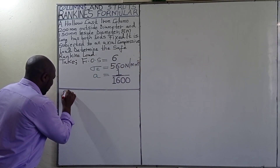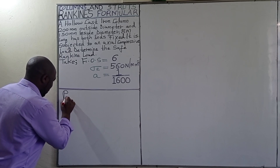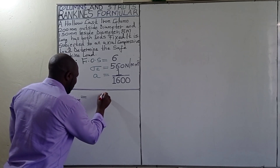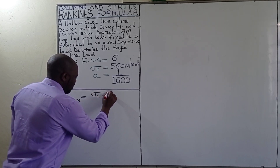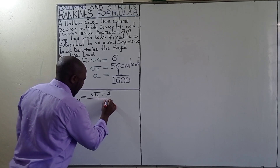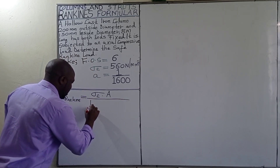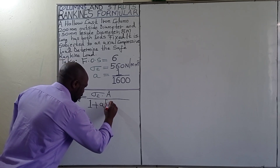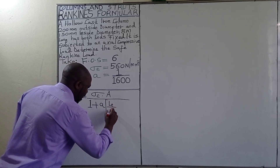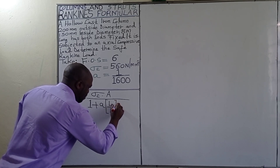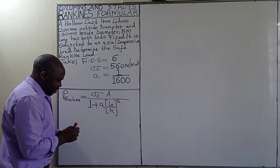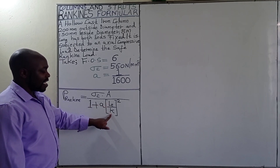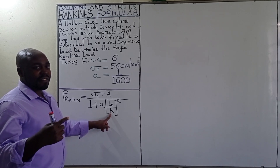The Rankine crippling load, P Rankine, is given by the crushing stress multiplied by the cross-sectional area of the member, divided by 1 plus constant A into the square of (L over K). A is the constant, L is the effective length, and K is the least radius of gyration.